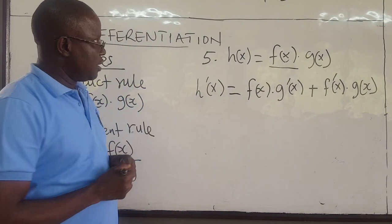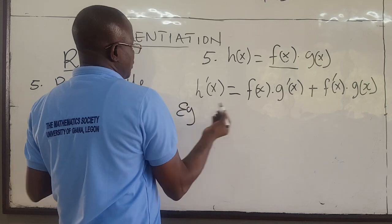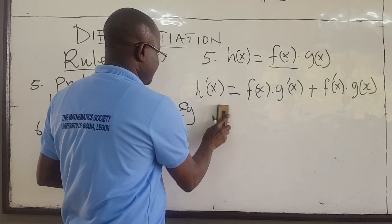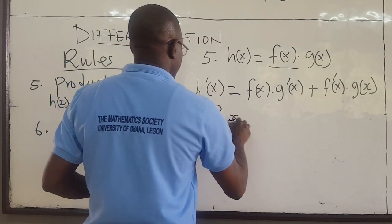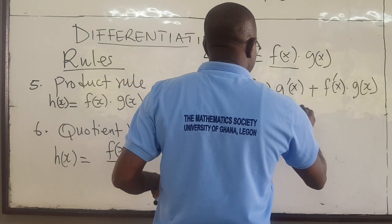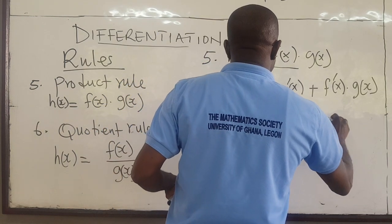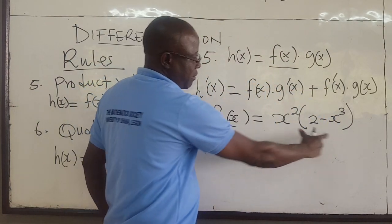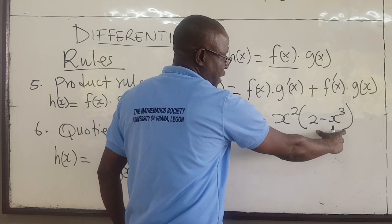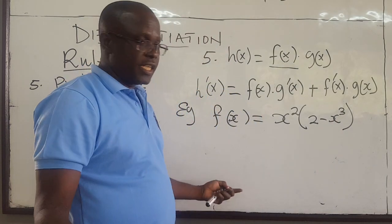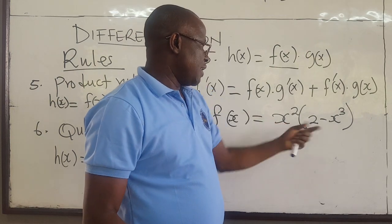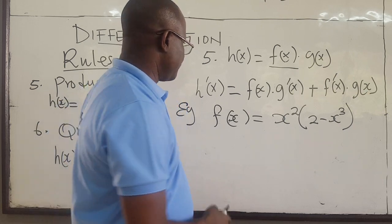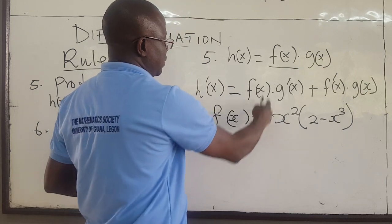You come across it a lot. Suppose that you have a function — let f(x) equal x squared times (2 minus x cubed). You have a function multiplied by another function, so you can apply the product rule here. The alternative, of course, is that you can expand this and then find the derivative of each term using the power rule.